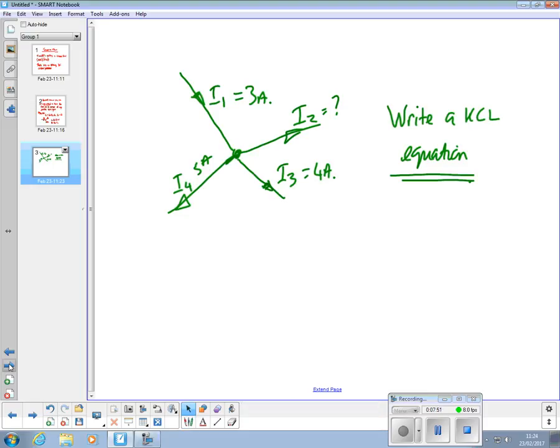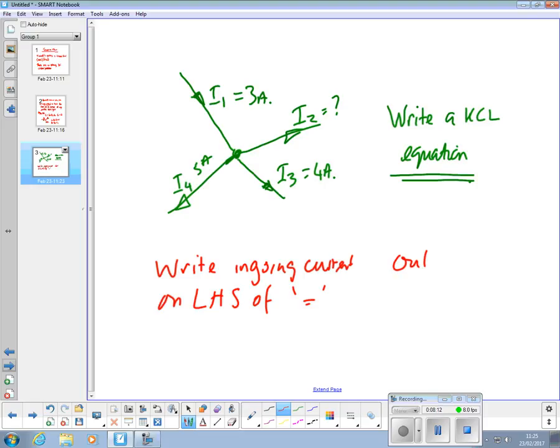And the method I'm suggesting that you do is to write in-going currents on left-hand side of equals, out-going on right-hand side of equals sign. It will not make any difference because you're usually going to have to rearrange it to the current that you're looking for anyway. But if, at least at this stage, if you're systematic about the way you go about doing this, it would not matter if I put out-going on the left and in-going on the right, it would make no difference. You still should get the same answer.